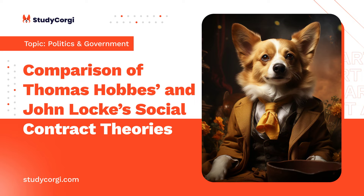People may revolt if the ruler cannot guarantee safety, but these efforts always end with disaster — the civil troubles, divisions, and calamities of the nation. Thus, Hobbes created his theory of social conflict to convince people that establishing a strong government with absolute power is essential; being unable to overcome their violent tendencies, individuals resort to social contract as the only method to achieve peace.